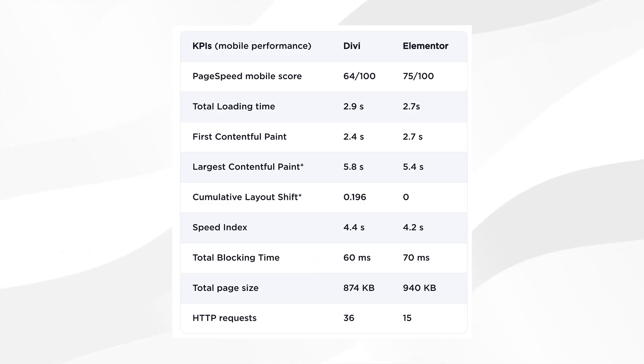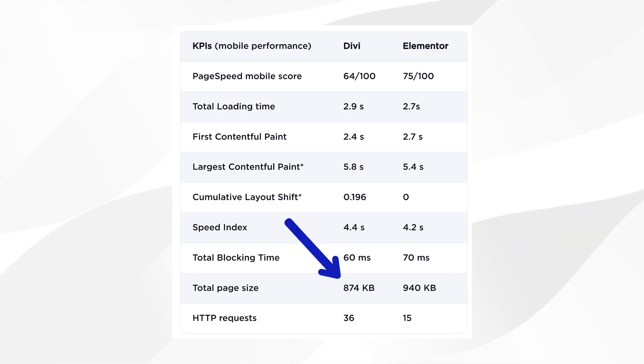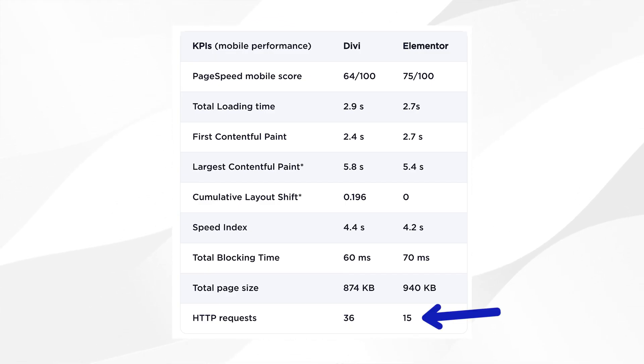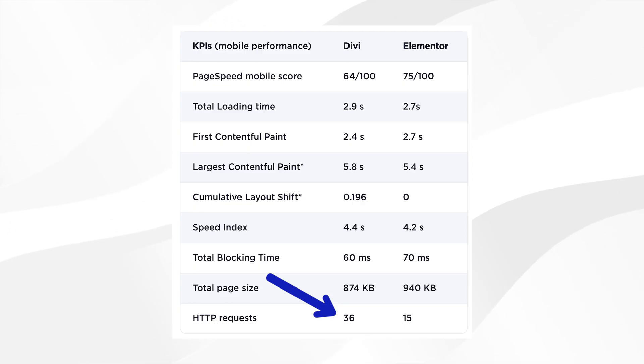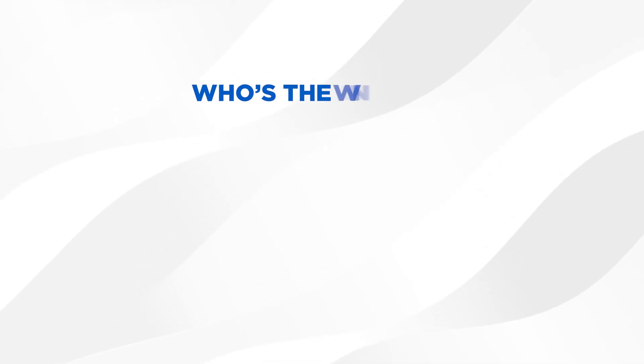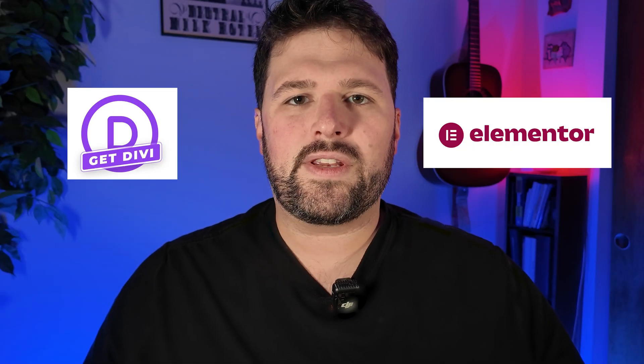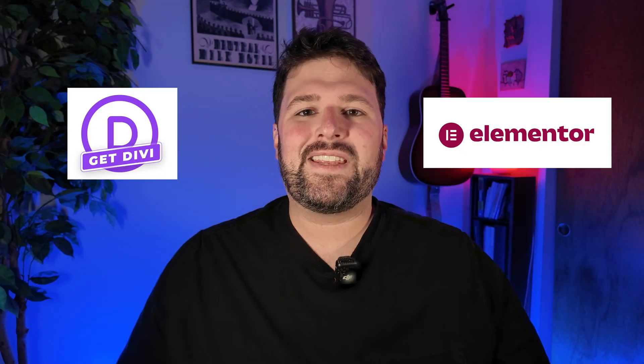Let's look at some additional performance metrics. Page size: Elementor was 940KB, while Divi was 874KB. For HTTP requests, Elementor got 15 requests while Divi had 36 requests. While Divi has a slightly smaller page size, it makes more than twice the number of HTTP requests — and that's crucial because each request adds to your loading time. So who's the winner? It appears Elementor edges out slightly in most categories, but both builders have room for improvement. Are you currently using either of these page builders? Drop a comment below with Team Elementor or Team Divi.